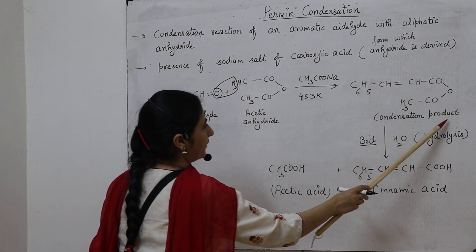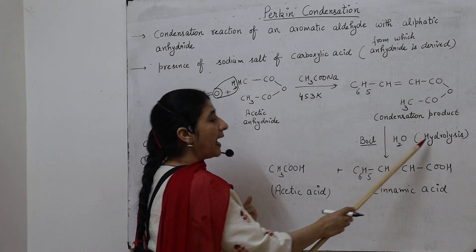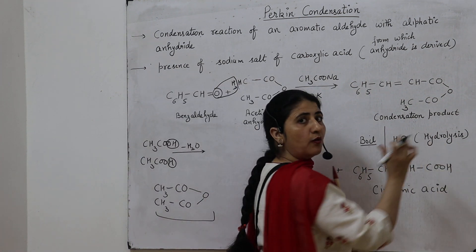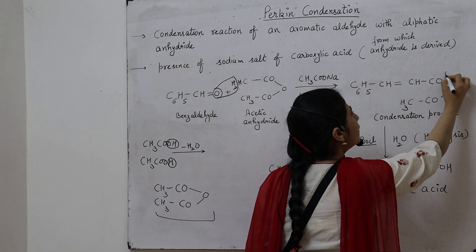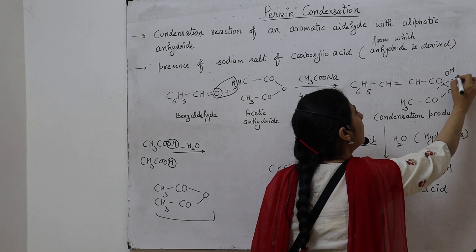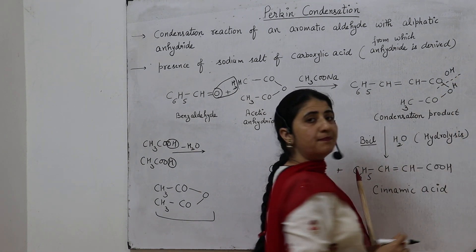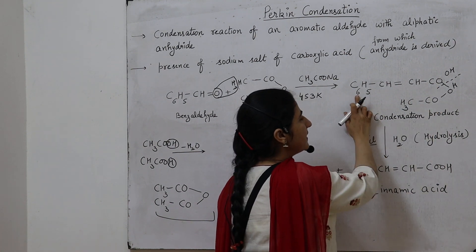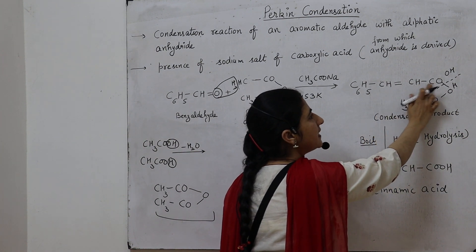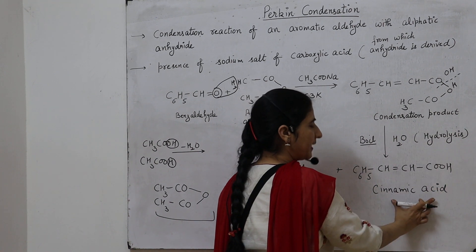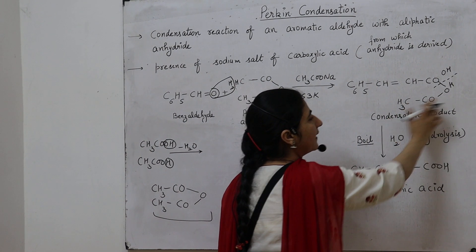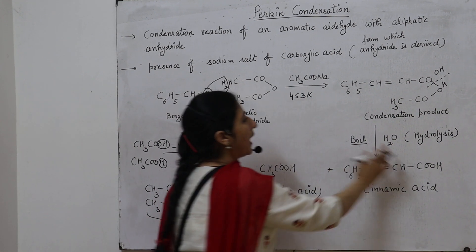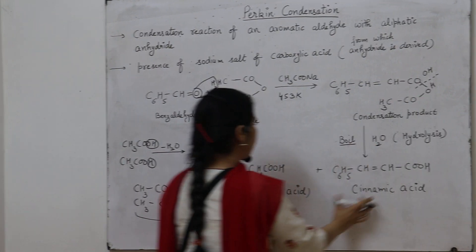This condensation product further undergoes hydrolysis — the breakdown by water, where OH and H cleave the molecule. Due to hydrolysis we get two products: first, cinnamic acid — C₆H₅-CH=CH-COOH — and second, acetic acid — CH₃COOH. So this is the overall Perkin condensation reaction.